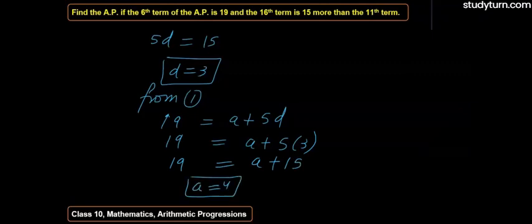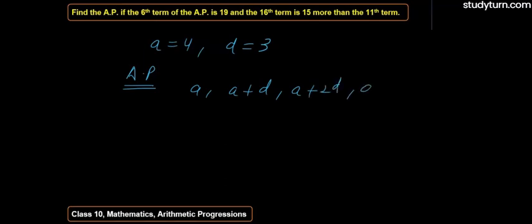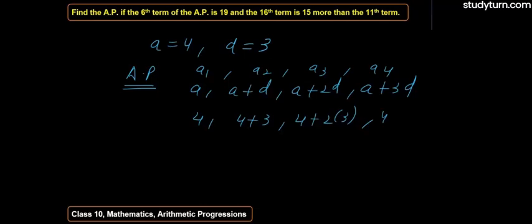So A and D both, A is equal to 4 and D value is equal to 3. So the AP is A, A plus D, A plus 2D, and A plus 3D. We can do these 4 terms. These are the first, second, third terms and the fourth term. A is 4, here we can write 4 plus 3, 4 plus 2 into 3, 4 plus 3 into 3. So this is equal to 4, 7, 10, and here we have 9 plus 4 is equal to 13. So this is the AP.